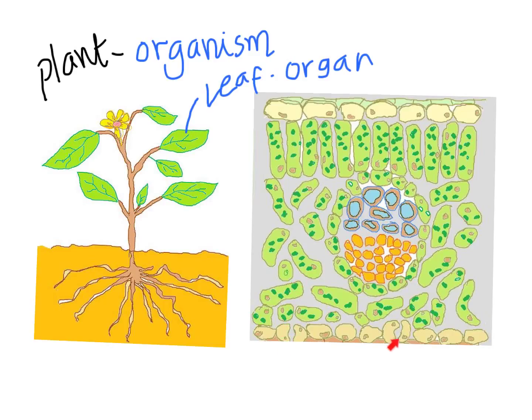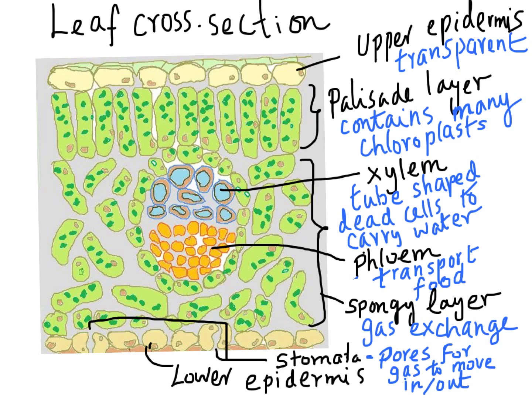You also have the lower epidermis, which contains pores through which gases can enter. As you can see, this pore leads outside, so air can move in and gases can move out of the leaf by diffusion. What you see here is a cross-section of a leaf, which illustrates why the leaf is an organ made up of different types of special tissues, which are in turn made up of special cells.